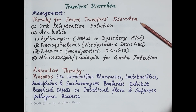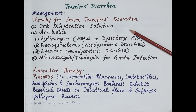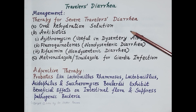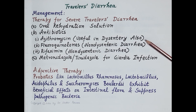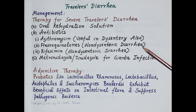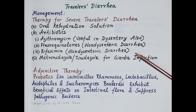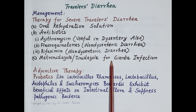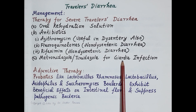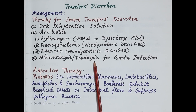For severe travelers' diarrhea: oral rehydration solution is a must, and antibiotics should be used. Azithromycin can be used even if the patient is suffering from dysentery. Fluoroquinolones can be used in severe but non-dysenteric travelers' diarrhea. Rifaximin may also be used to treat severe non-dysenteric travelers' diarrhea. If the patient has a protozoal infection such as Giardia, metronidazole or tinidazole may be administered.